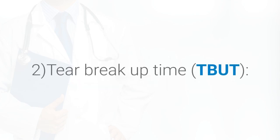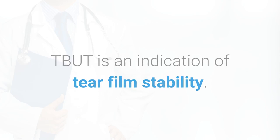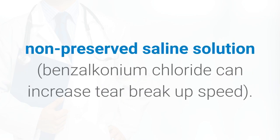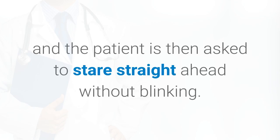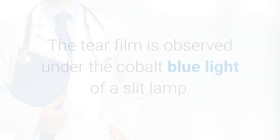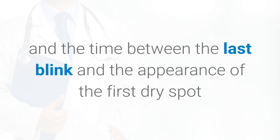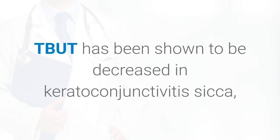Tear breakup time (TBUT) is an indication of tear film stability. The proper method of TBUT testing is using a fluorescein-impregnated strip wet with non-preserved saline solution, as benzalkonium chloride can increase tear breakup speed. The dye is distributed by blinking, and the patient is then asked to stare straight ahead without blinking. The tear film is observed under the cobalt blue light of a slit lamp, and the time between the last blink and the appearance of the first dry spot or hole in the tear film is measured and equals the TBUT.